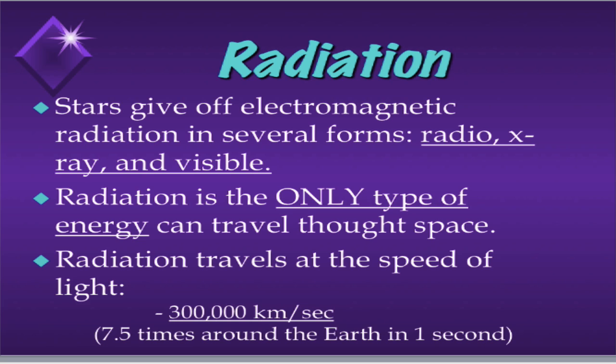We see stars because of the visible light that they produce. However, stars also produce other kinds of radiation. Stars can also produce radio waves and x-rays. You might be asking yourself, how do we know that stars produce radio waves and x-rays since we cannot see those types of radiation? Well, we can't see them, so we have to use special tools. Scientists have been able to create special telescopes that collect the radio waves and the x-rays produced by stars. From these telescopes, we have been able to learn so much more about how stars work.